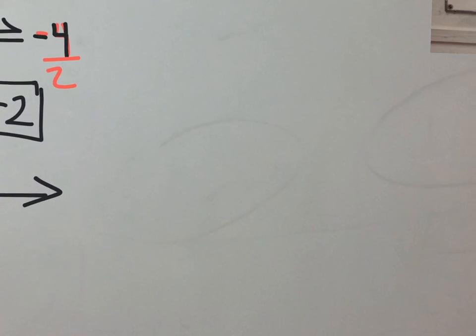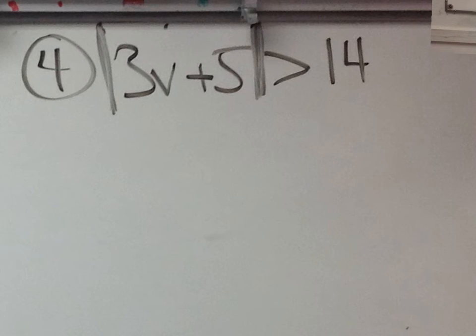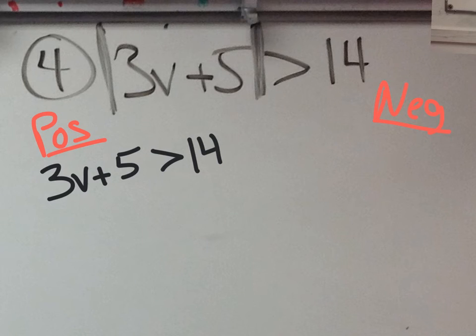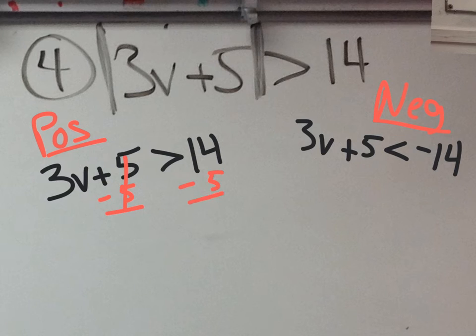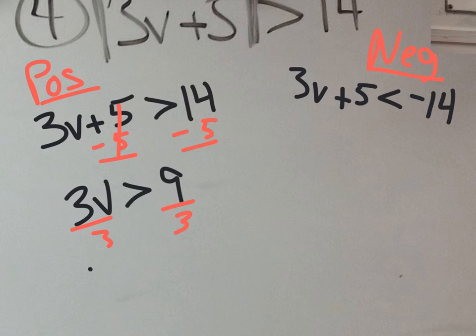So let's jump to this other one. Now, this one already has an isolated absolute value. So let me just go positive and negative situation. And the positive situation is writing it exactly the way it is without the absolute values. Negative situation is the same exact thing, but just change this and change the sign on the right side. So let's focus in on the positive situation and solve it. So we're going to subtract 5. Subtract 5. And we will get 3v is greater than, what is that, 9? Then we're going to divide by 3 and divide by 3. And we get v is greater than 3. Because 9 divided by 3 is 3.